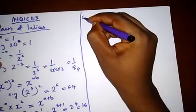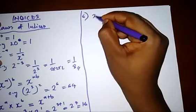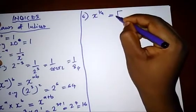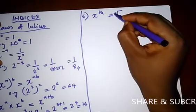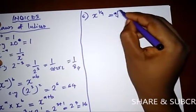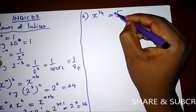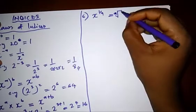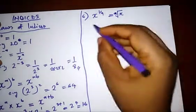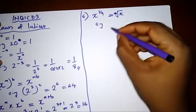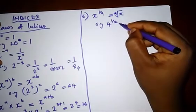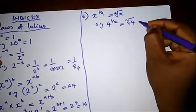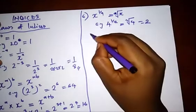Another law: when you have a number raised to a fractional power, the denominator tells you which root to take — if it's two, it's a square root; if it's three, it's a cube root; if it's four, it's a fourth root. For example, four raised to the power one over two gives the square root of four, which is two.